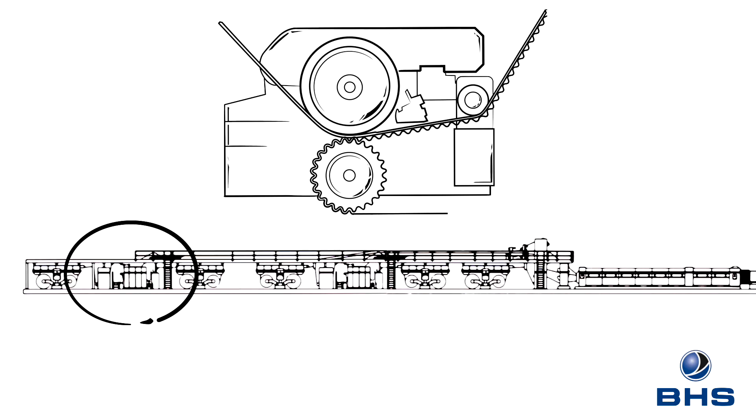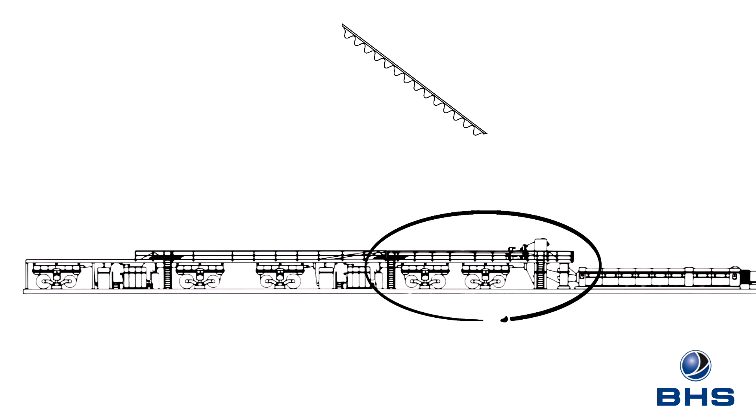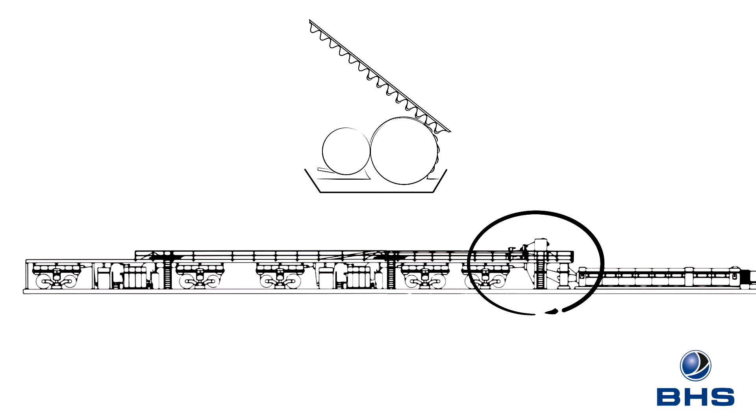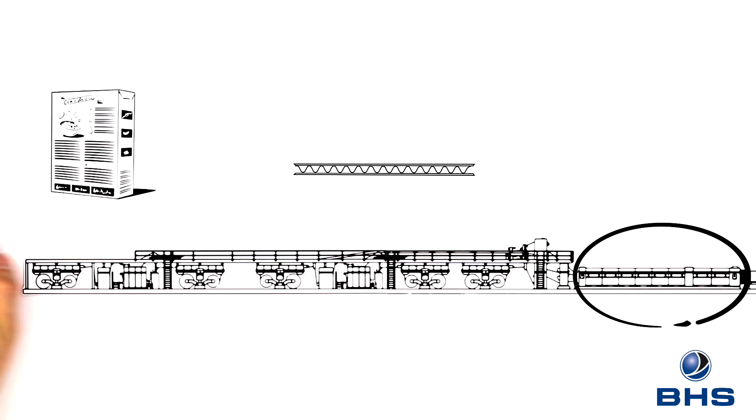The single-faced corrugated web produced this way is transported in loops via the bridge and stored there. In the glue unit, the free flute tips are likewise coated with a layer of glue. This side too is then glued in the double facer to another paper, known as the double facer liner paper. This will later form the outside of the packaging.